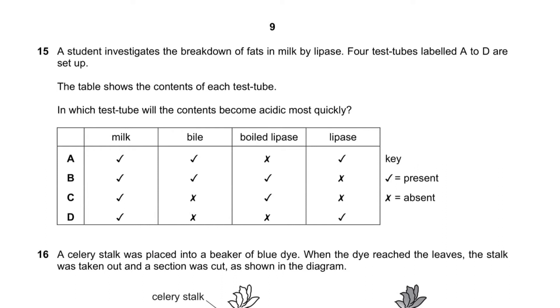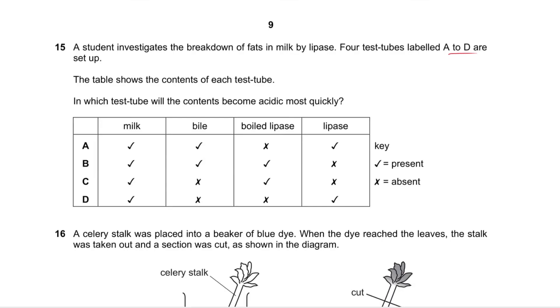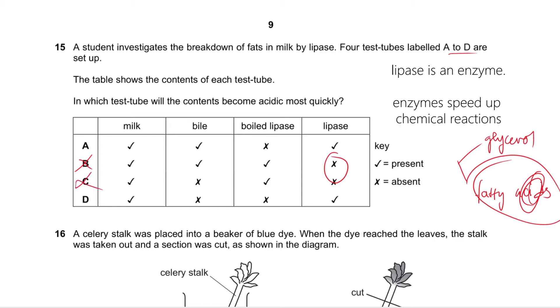Question number 15 says a student investigated the breakdown of fats in milk by lipase. Four test tubes labeled A to D are set up. In which test tube will the contents become acidic most quickly? I was asking that question because once you break down fats they break down into glycerol and fatty acids. So it's asking which is broken down most quickly, basically. So it's obviously something that does have lipase, and obviously bile, a greenish yellow secretion that's produced in the liver, is needed to break down the fats into fatty acids. So we do need it, so the answer is A.